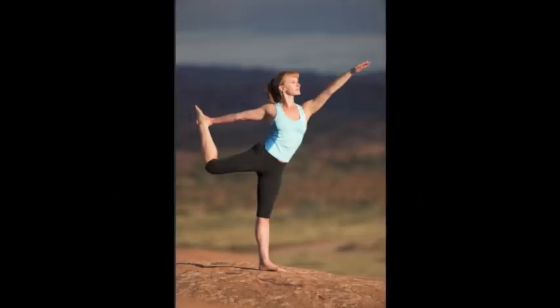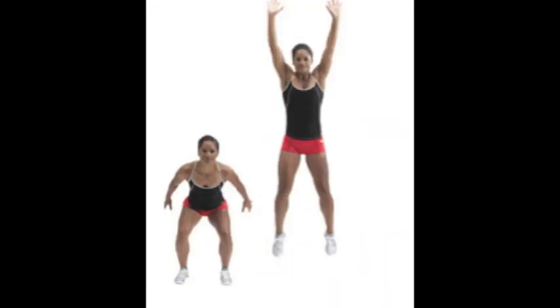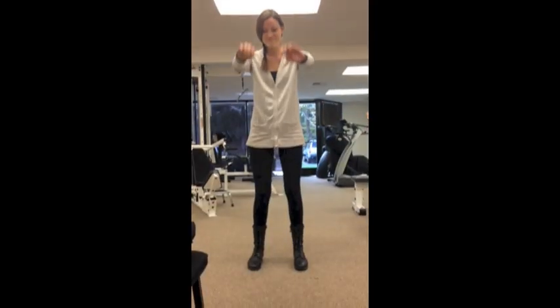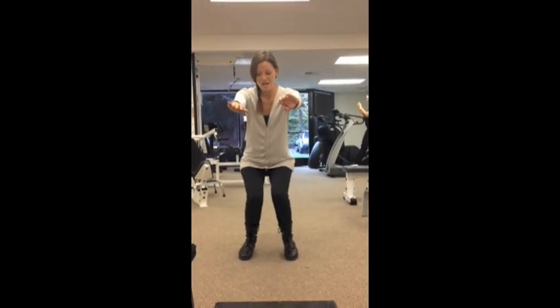The foot is made to be a stable base to push off of, as well as an absorber of forces during activity. Excessive pronation at the foot leads to rotation at the tibia, which leads to the knee being more oriented towards the midline. In this way, the medial collapse of the foot also puts the knee in a vulnerable position.